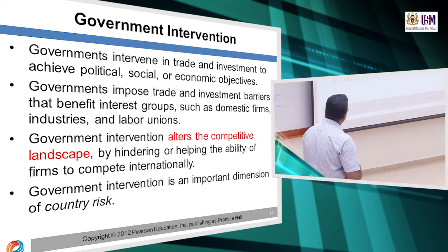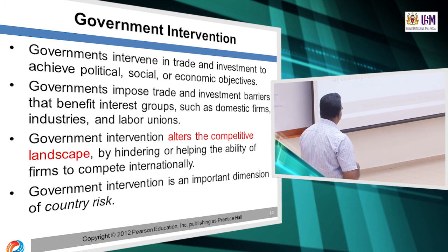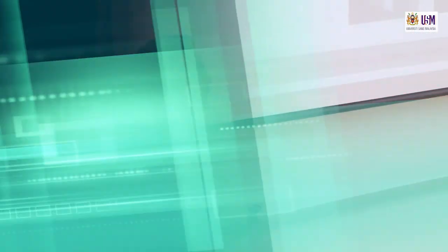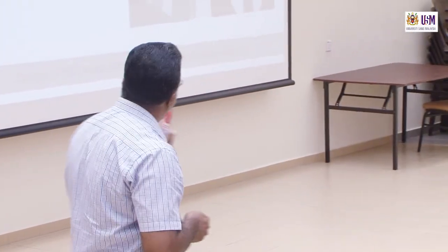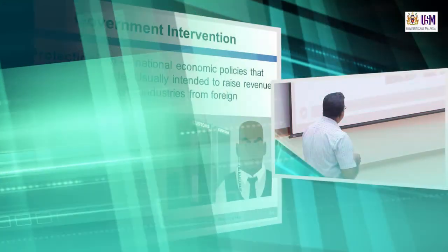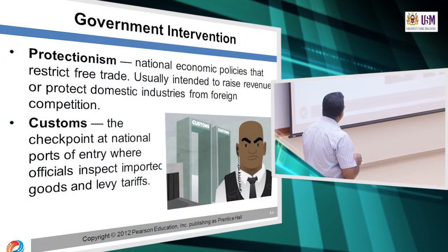So government intervention is an important dimension of country risk. Government intervenes for many reasons, one of which is protectionism — national economic policies that restrict free trade.